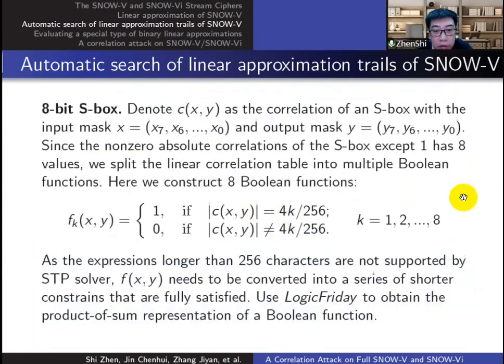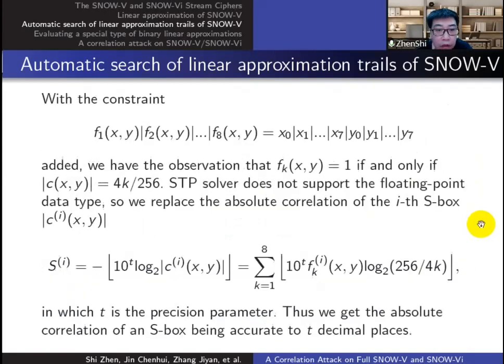Here is the characterization of the S-boxes of AES. We first adopt the idea of Abdelkhalek to split the linear correlation table into eight Boolean functions. Then we need to get the product-of-sum representation of each Boolean function and convert it into a series of shorter constraints that are fully satisfied by the software LogicFriday. Finally, we add the bijective constraint.